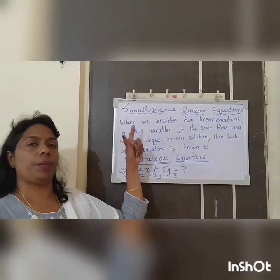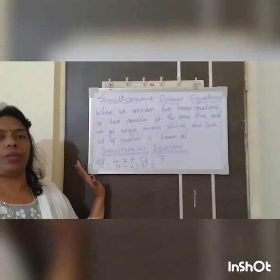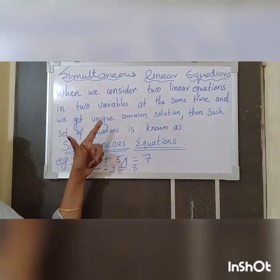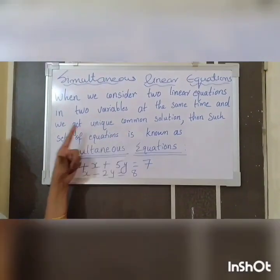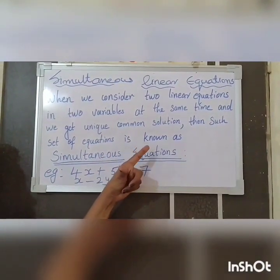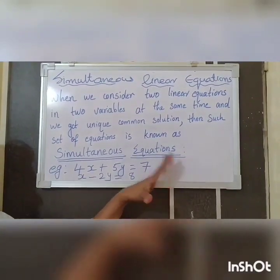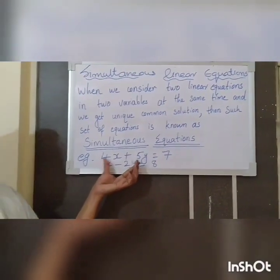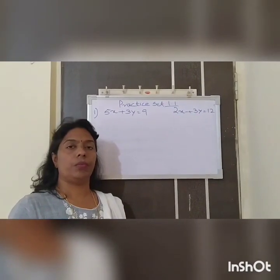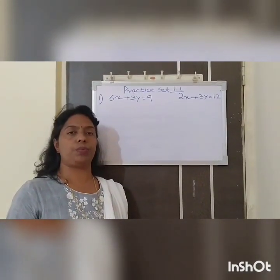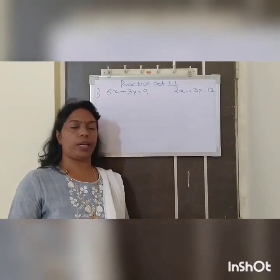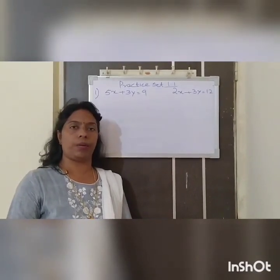Now we are moving to the next section: simultaneous linear equations. When we consider two linear equations in two variables at the same time and we get a unique common solution, then that set of equations is known as simultaneous equations. For example: 4X plus 5Y equals 7 and X minus 2Y equals H. We have learned to solve simultaneous equations by elimination method and substitution method in 9th standard. In your textbook some examples are given — you have to practice all example sums.